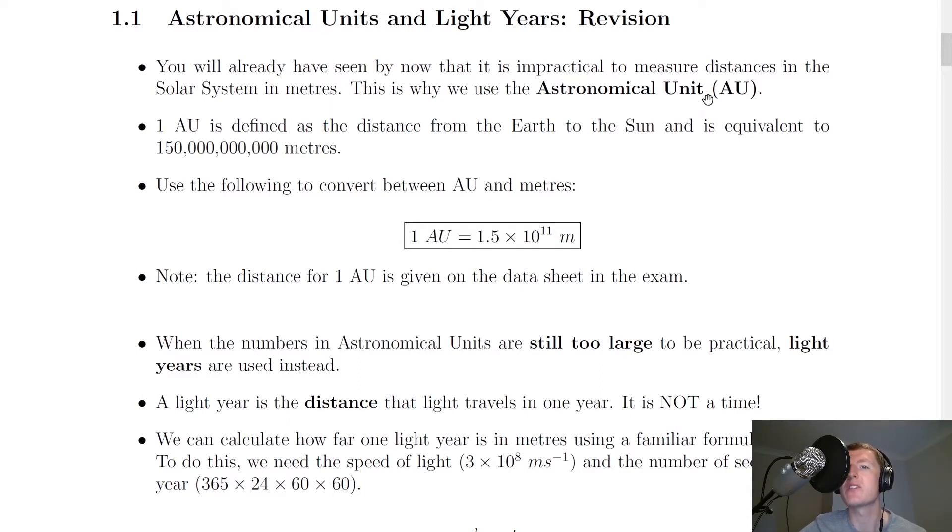This is why we use the astronomical unit, or AU for short. One AU is defined as the distance from the Earth to the Sun and is equivalent to 150 billion meters.